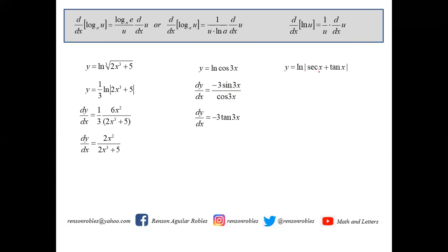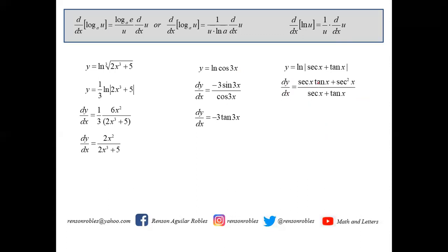For y equals ln(sec x + tan x), u equals sec x + tan x, and du equals sec x tan x plus sec² x. So dy/dx equals (sec x tan x + sec² x) over (sec x + tan x). Factoring sec x from the numerator gives sec x(tan x + sec x) over (sec x + tan x), and canceling yields dy/dx equals sec x.